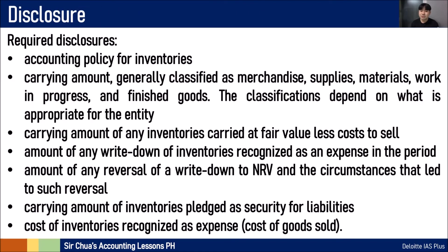The required disclosures for IAS-2 include: the accounting policy used for inventories; the carrying amount generally classified as merchandise, supplies, materials, work-in-process, and finished goods — classifications depend on what is appropriate for the entity; carrying amount of inventories carried at fair value less cost to sell; amount of any write-down of inventories recognized as an expense — because you are doing the lower of cost and NRV measurement, any write-down must be disclosed; any amount of reversal as well; and the carrying amount of inventories pledged as security for liabilities — if you have a debt and you pledged inventory as a guarantee.